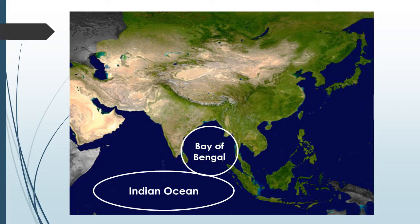Next is the Bay of Bengal. It borders the east side of India and it's the largest bay in the world. It's almost a triangular shape.